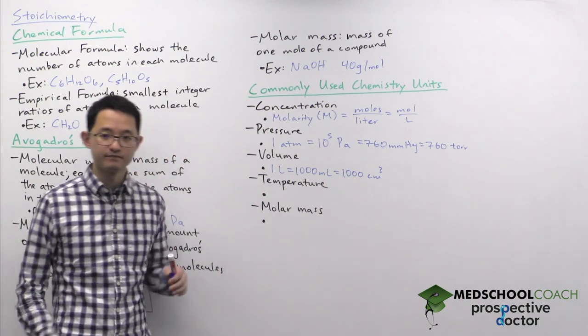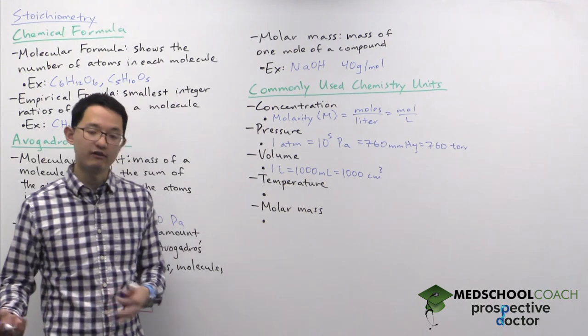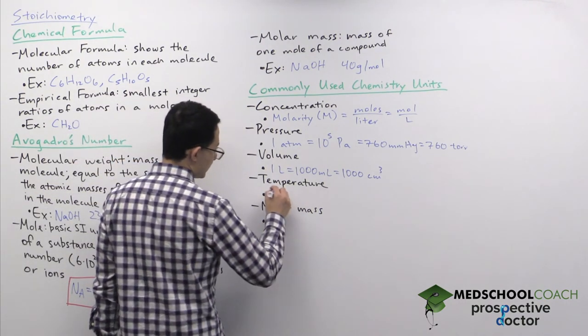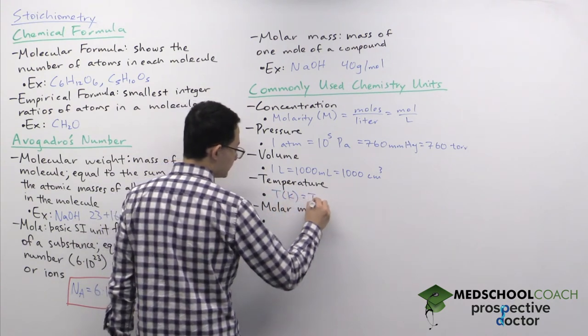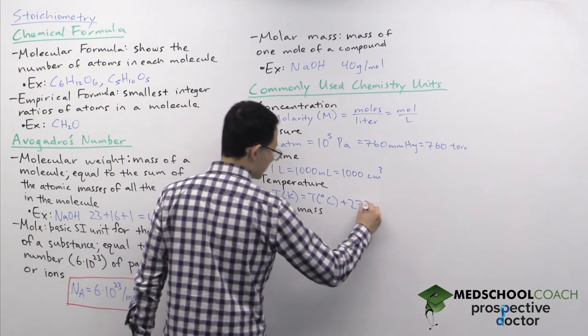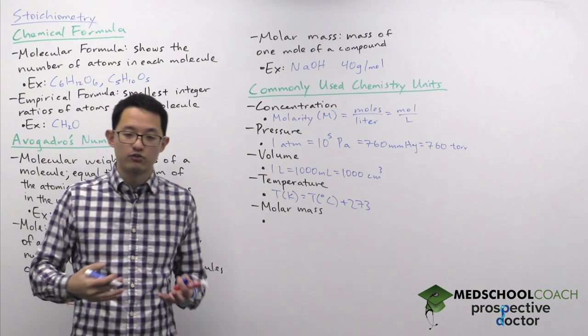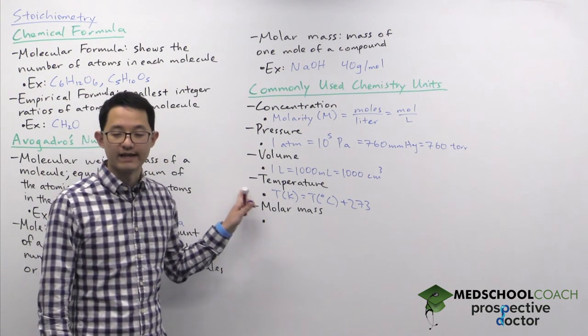Then we have temperature. Temperature, we use the Celsius scale or the Kelvin scale. So to convert between these two, the temperature in Kelvin is equal to the temperature in degrees Celsius plus 273. So that would mean, for instance, at room temperature of about 25 degrees Celsius, that is equivalent to 298 Kelvin.